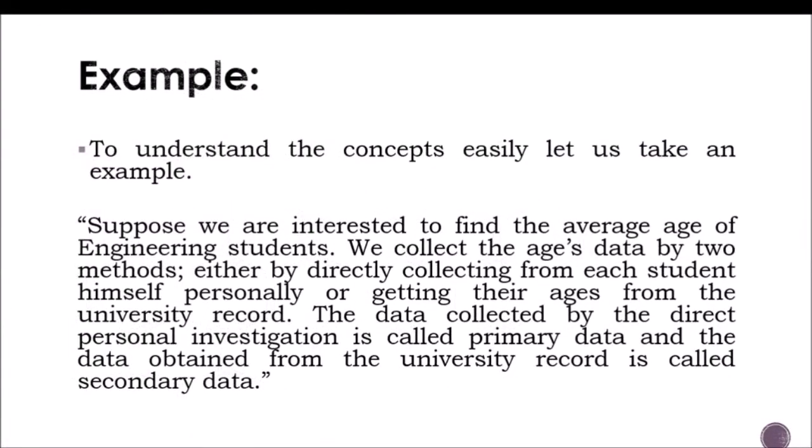To understand the concepts easily, take this example: suppose we are interested in finding the average age of engineering students. We collect age data by two methods — either by direct collection from each student personally, or by getting their ages from the university record. Data collected by direct personal investigation, going to each engineering student to get their age, gives primary data. Obtaining the data through the record of the university or the dean's office gives secondary data.